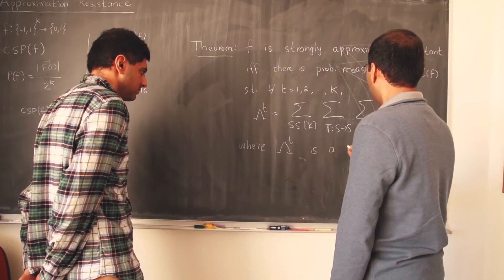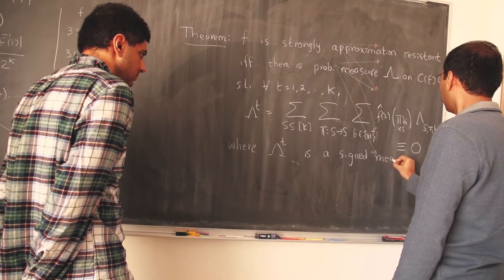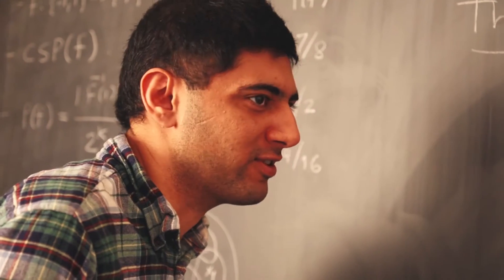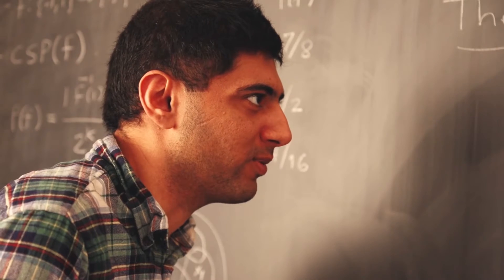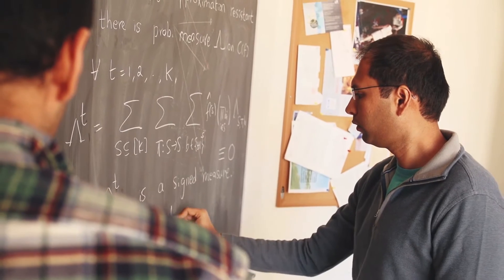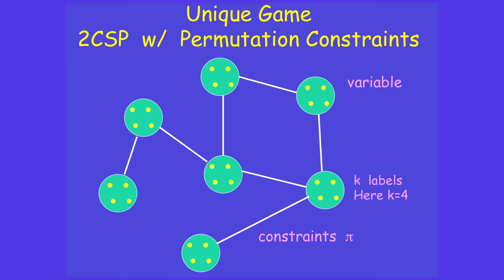It might come as a surprise to you that we are so interested in knowing that certain computational problems cannot be solved — in particular, cannot be solved fast. We ought to investigate both the power as well as the limitations of our methods. From a practical point of view, it's often useful that certain computational tasks cannot be performed. For example, I'm sure you would be happy to know that a hacker cannot break into your bank account and steal all your money.